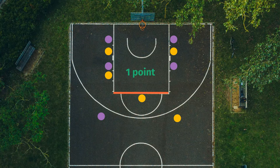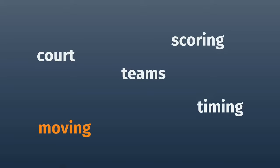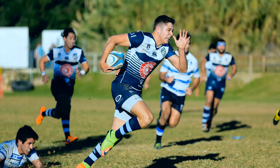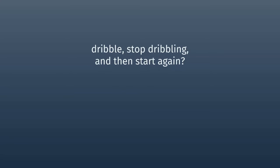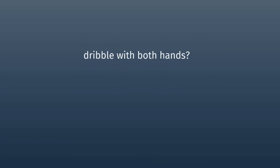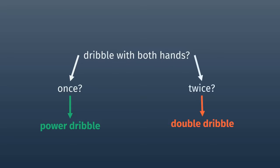In the beginning of basketball, you could just get the ball and run around with it, but that was too rugby — so they said you have to bounce the ball if you want to move around. This is called dribbling. You want to run with the ball without dribbling? You can't. That's called traveling and the other team gets the ball. You want to dribble, stop, and then start dribbling again? You can't. That's called a double dribble and the other team gets the ball. You want to dribble with two hands? You can kind of do that — bounce it once with both hands, that's fine. Bounce it twice with both hands? You can't. That's also called double dribble for some reason, and the other team gets the ball.